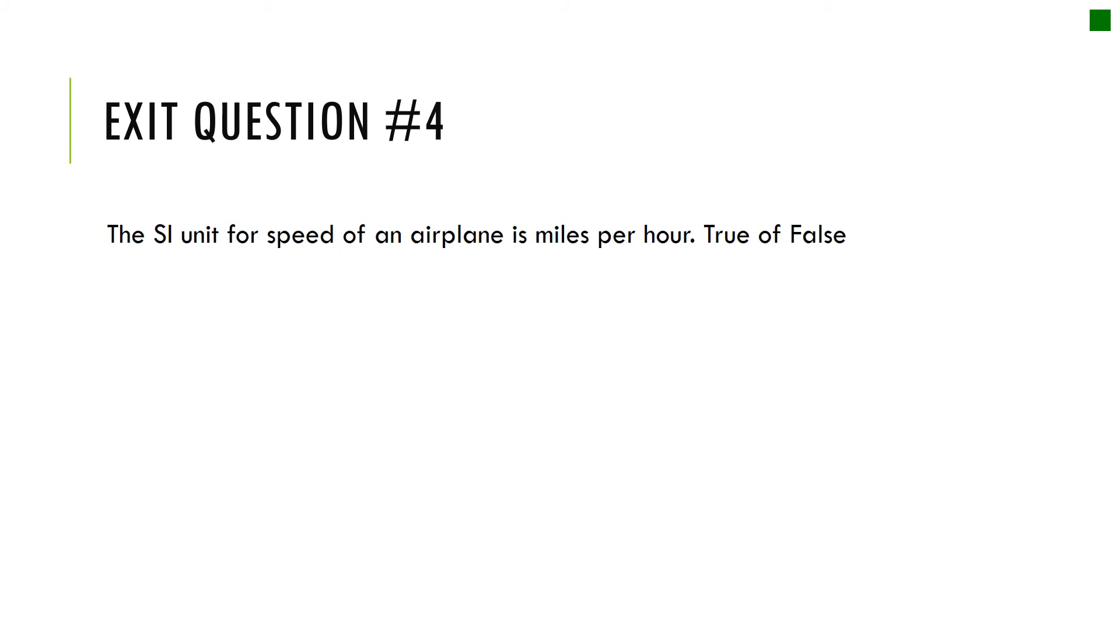Last question. The SI unit for speed of an airplane is miles per hour. Is this true or false? Hopefully you thought this was false because we don't use miles in science. We don't use miles per hour in science. We use the metric system, so we use kilometers per hour or meters per second or something that has meters in it. That's it for your notes. We will practice this and discuss this more in class.